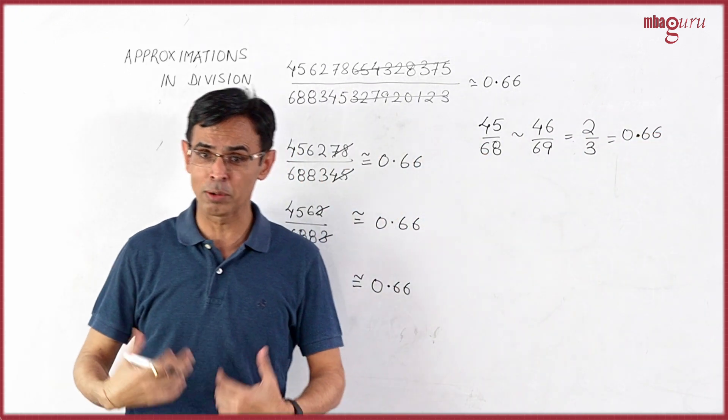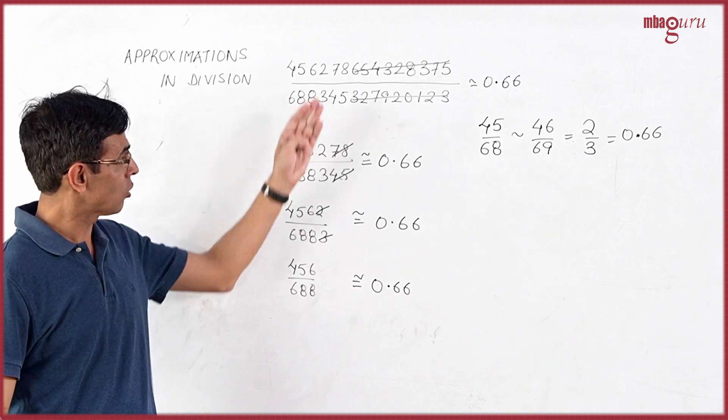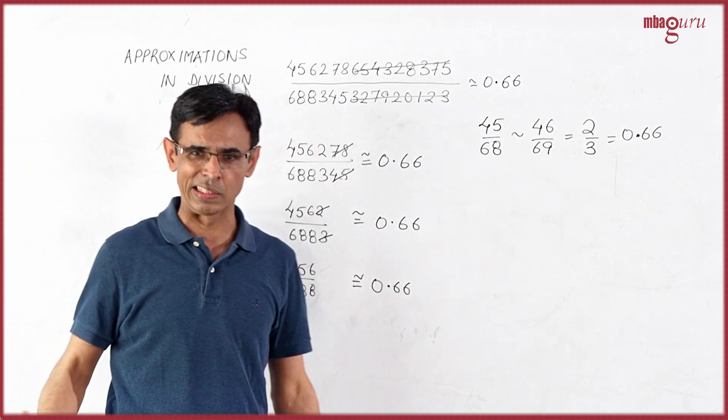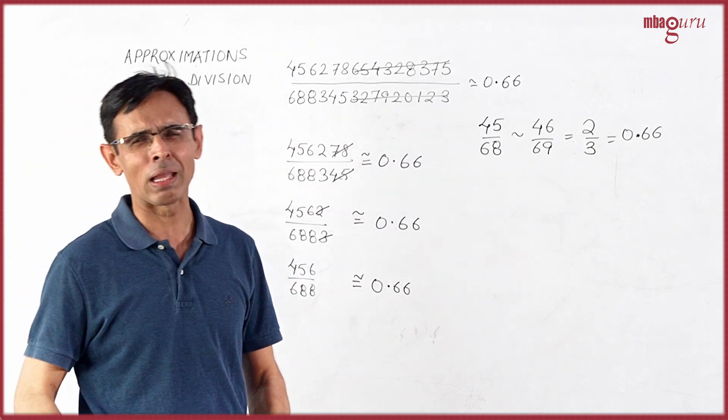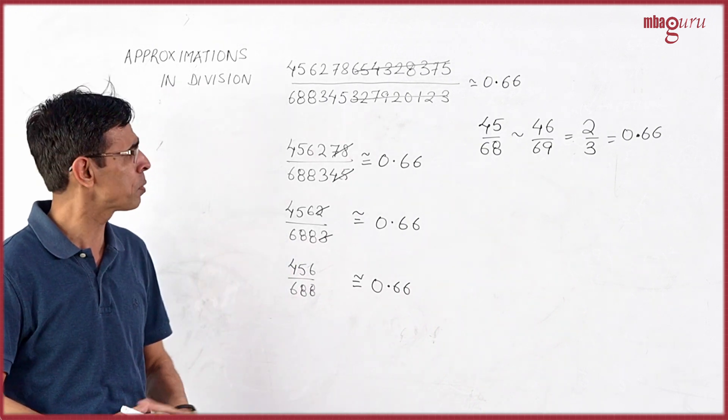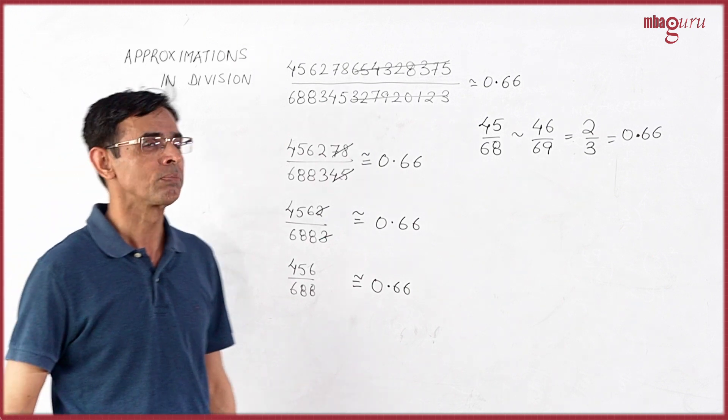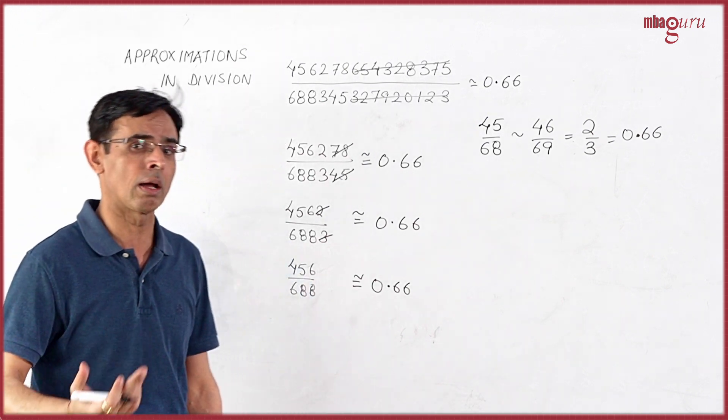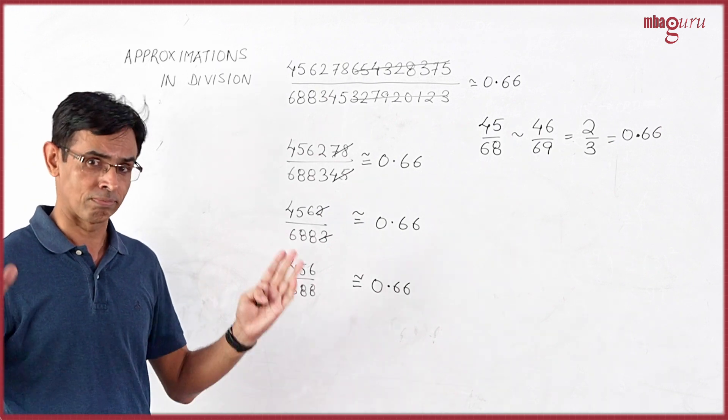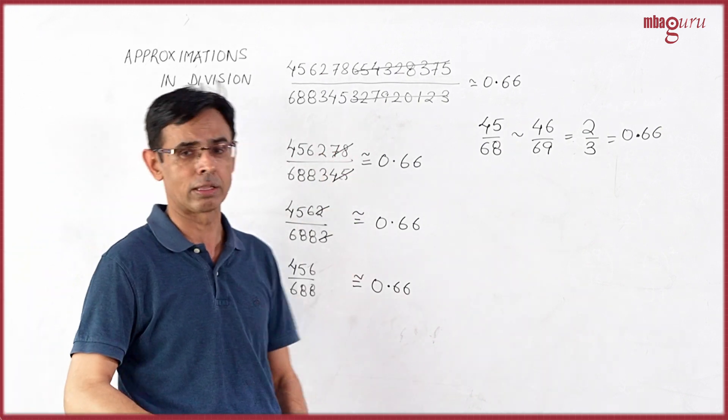Now, it's important to understand what's happening here. One thing we have seen is that in such big division figures, if we remove the equal number of digits from the right side, there must be no big difference. There's absolutely or almost zero difference in the values if we remove an equal number of digits from the right in expressions of division when the digit size is big. We have lots of numbers in both the numerator and the denominator.